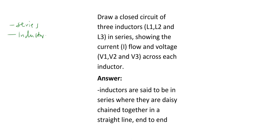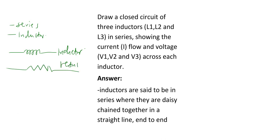First of all, the symbol for an inductor — it looks like this. An inductor is just a coil, so an inductor looks like this. Don't confuse it with a resistor. For a resistor, you draw a zigzag line like that. So be sure not to confuse the two. This is a resistor. This is an inductor.